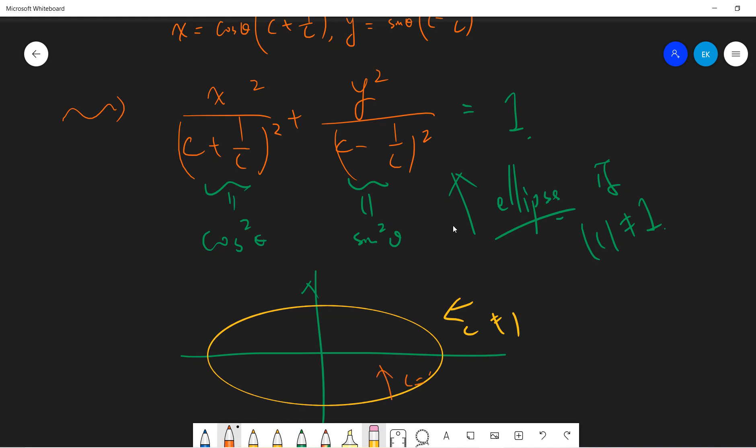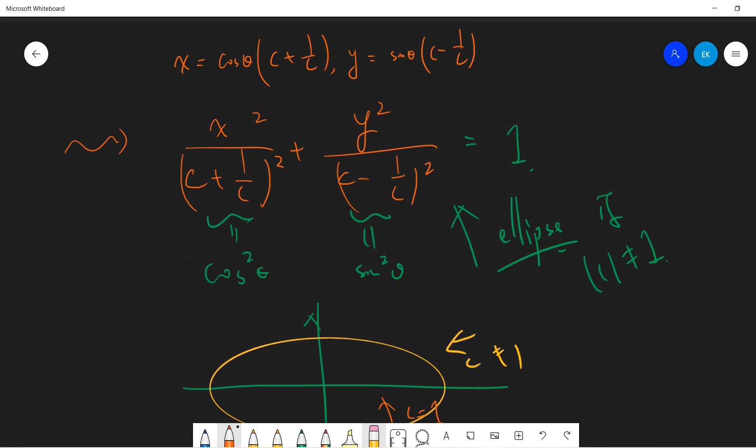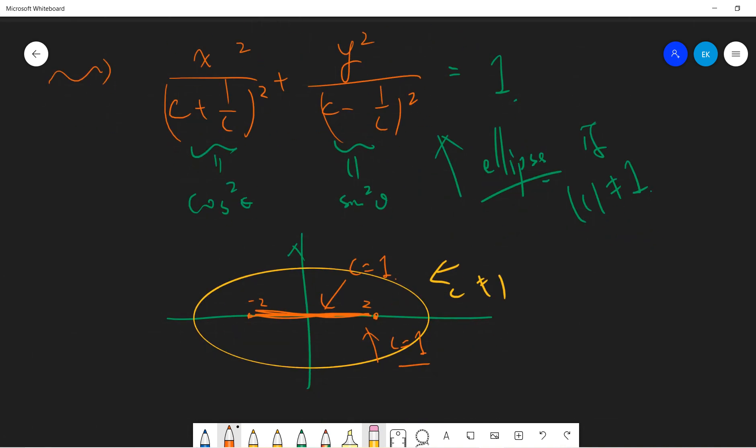And then let's say if c equals to 1, and then c is equal to 1, then y will be 0. Right. OK, x will be x will be just cosine. Right. But the maximum of x is 2. Right. Because 1 plus 1 is 2. So you got here, which is 2. So this line, this straight line is c equals to 1. OK, so really a simple example.